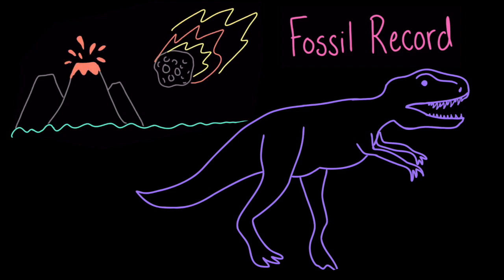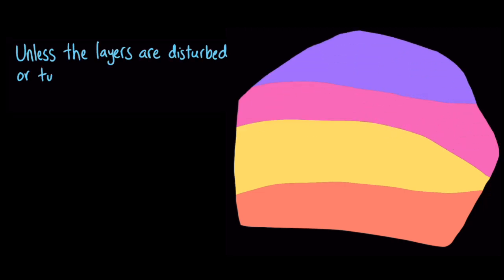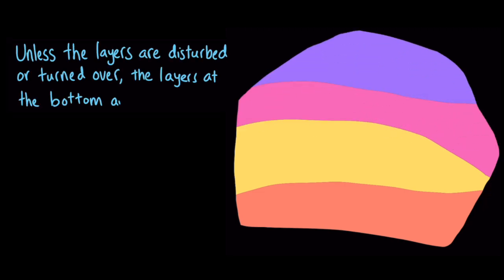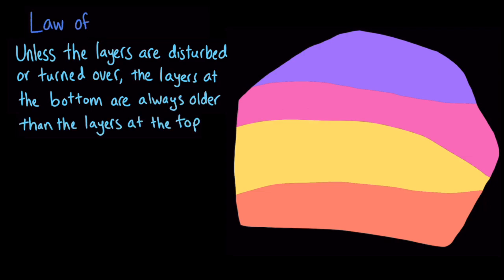But how do geologists know when one rock layer is older than another? Well, when sedimentary rocks form, they are deposited in layers, one on top of the other. So, unless the layers are disturbed or turned over, the layers at the bottom are always older than the layers at the top. Geologists call this rule the law of superposition.